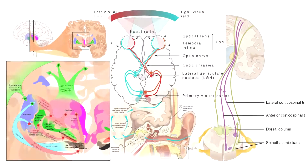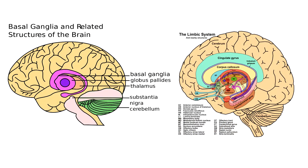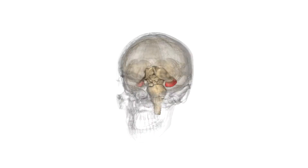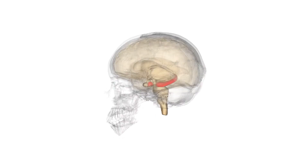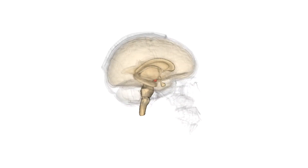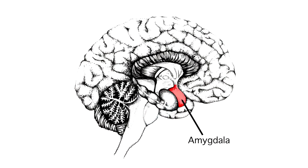Much of the information going in and out of the brain passes through its central parts. Some of these central parts related to memory are the hippocampus, the amygdala, the striatum, and the mammillary bodies. The hippocampus is often related to spatial and to some degree declarative learning, whereas the amygdala and other parts in the limbic system are believed to be important for emotional memory.